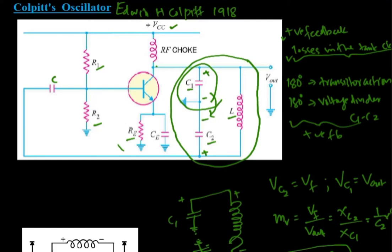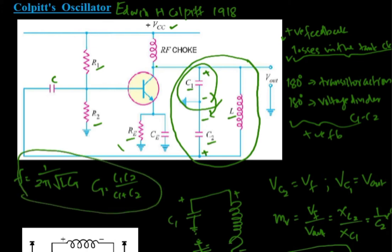One thing I forgot while discussing the Colpitts oscillator is that the frequency of oscillation is given by 1 divided by 2π√(L·CT), where the capacitances are connected in series, so the total capacitance CT is given by C1·C2 divided by C1 plus C2. This is the frequency of oscillation of a Colpitts oscillator. Its main use is in commercial function generators, widely used to produce frequencies up to 100 MHz.